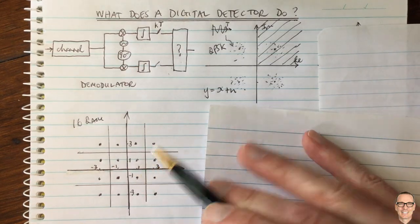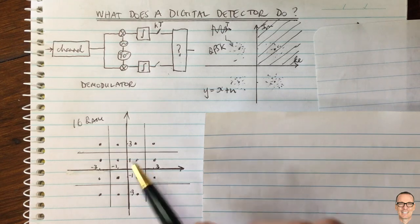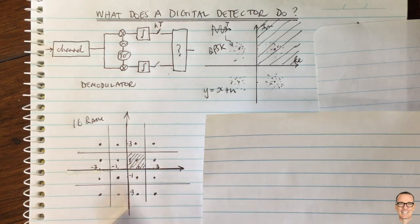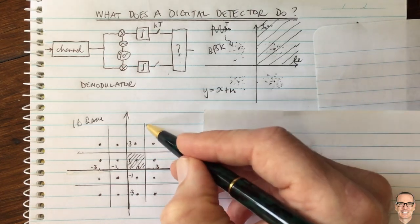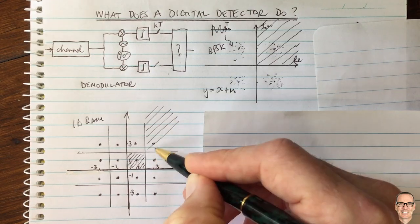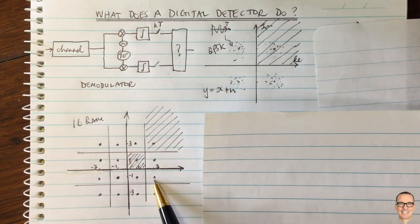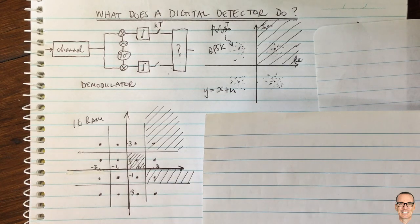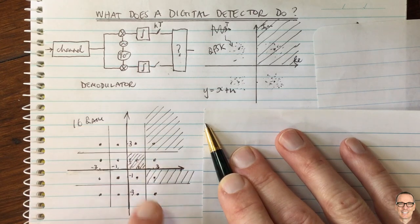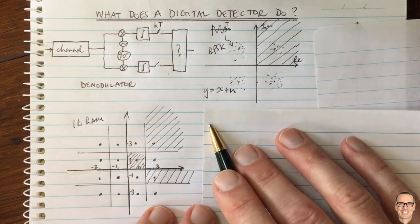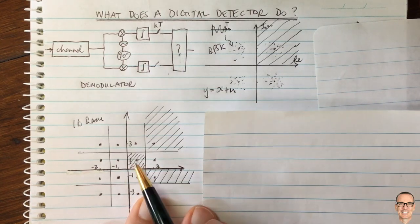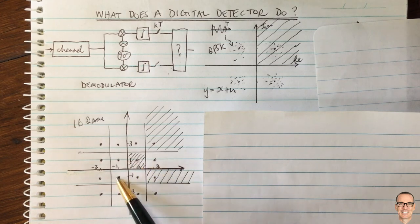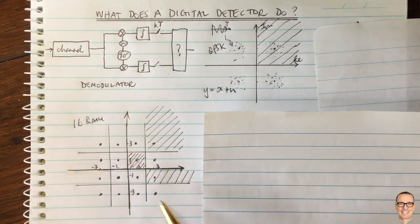There are different symbol error rates for different symbols transmitted. If a center symbol is transmitted, you won't make an error as long as the noise causes the result to land within that box. For a corner symbol out here, the box is much bigger, so errors are less likely. For an edge symbol, the box is more rectangular. To work out the symbol error rate for 16 QAM, consider each type of box separately and work out the probability that Gaussian noise exceeds the distance to the edge of the box. There are four corner boxes, multiply by four; four edge-type boxes, multiply by four.